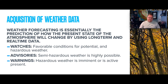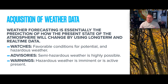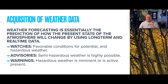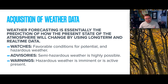We can categorize weather alerts into three families: watches, advisories, and warnings. Watches stand for a favorable condition for potential or hazardous weather — we're keeping an eye on it because it may not happen. An advisory means semi-hazardous weather is highly possible; things have escalated. A warning means hazardous weather is imminent — we are on standby and it's going to occur, or it's already active and present in the current state of the atmosphere.